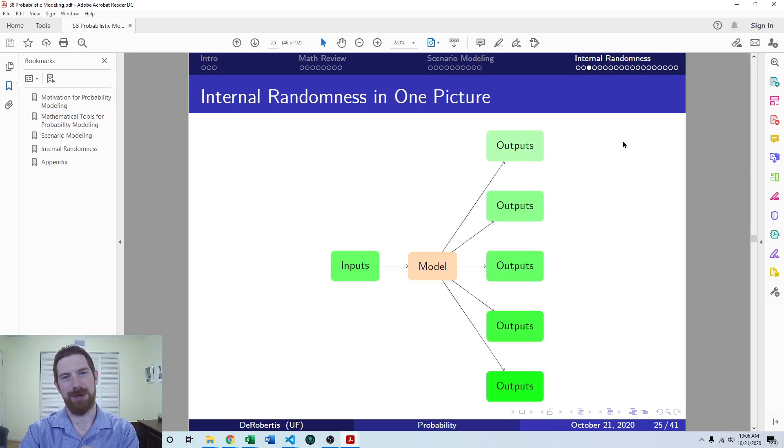Here's a quick graphic which visualizes internal randomness and the biggest change to the way that you work with your model. With internal randomness, you have the same exact inputs to the model and you run it. But each time that you run it, you get different outputs. That is very different from everything we've done so far where the same inputs are always going to give the same outputs.